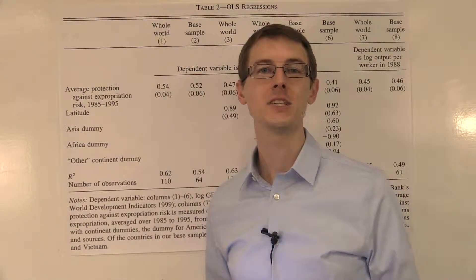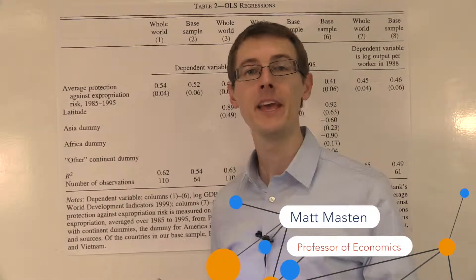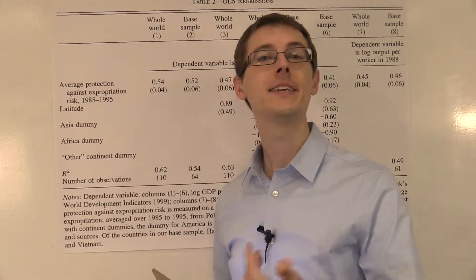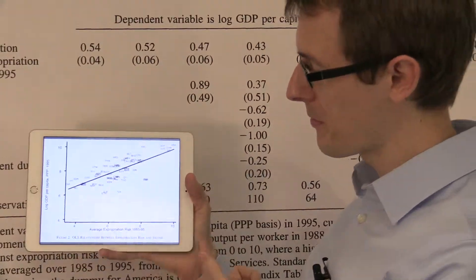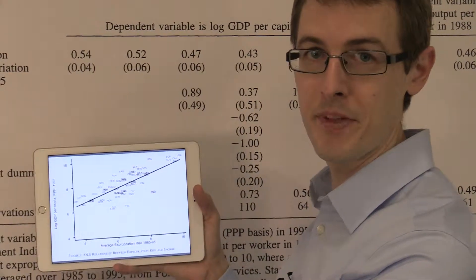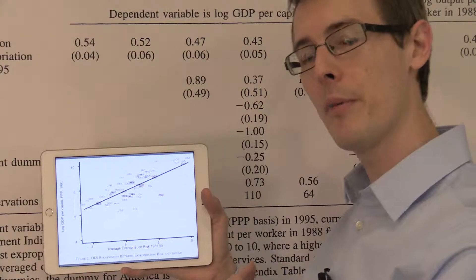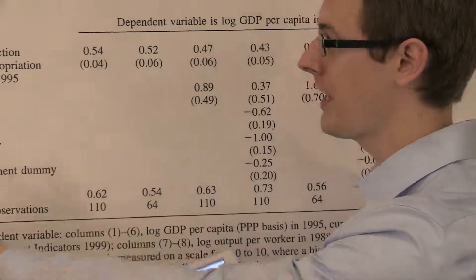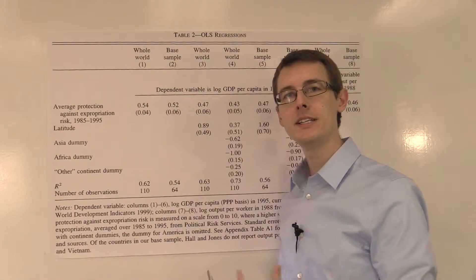Before, we talked about regressions as a way of summarizing the correlation in the data. I gave an example of the correlation between property rights and economic development, and I showed you this plot. We've got property rights on the horizontal axis, economic development on the vertical axis, and we can see there's generally a positive relationship. Over here, I've got a regression table that summarizes the same data.